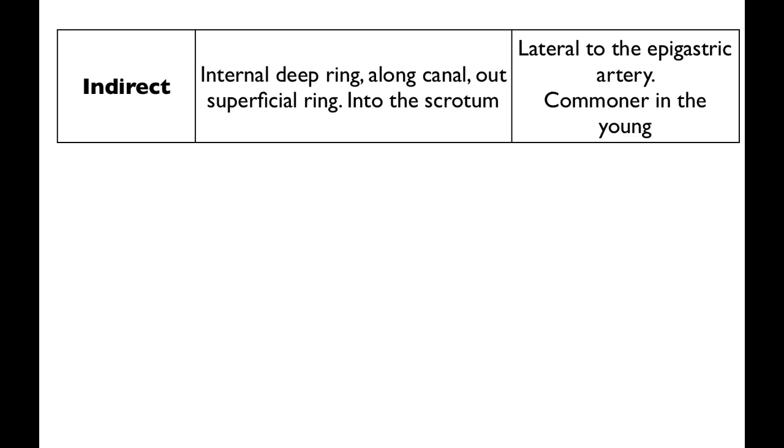For indirect hernias, the clues will be that it's a younger person, maybe a child or young adult, and it will be in the scrotum. Being lateral to the epigastric arteries is something you'll find at time of operation. Clinically, it's very difficult to work that out.